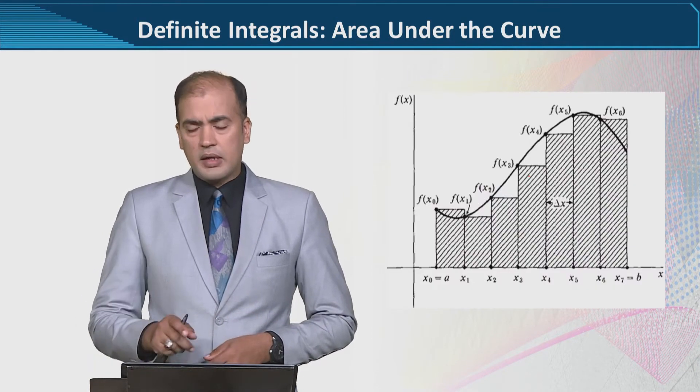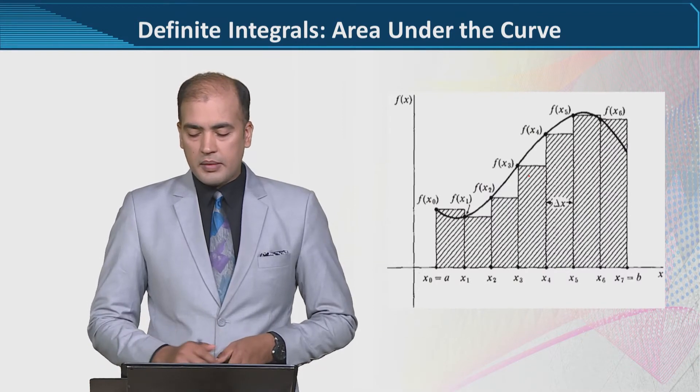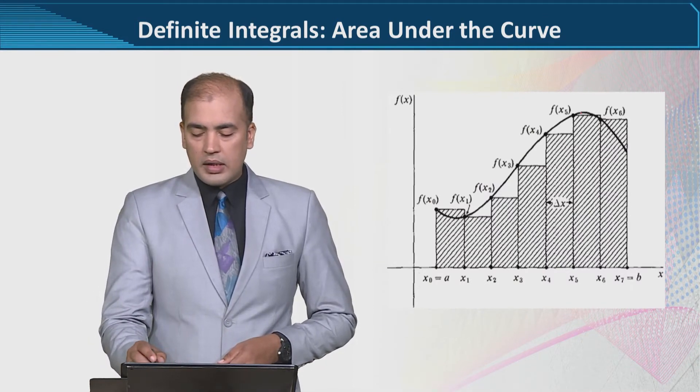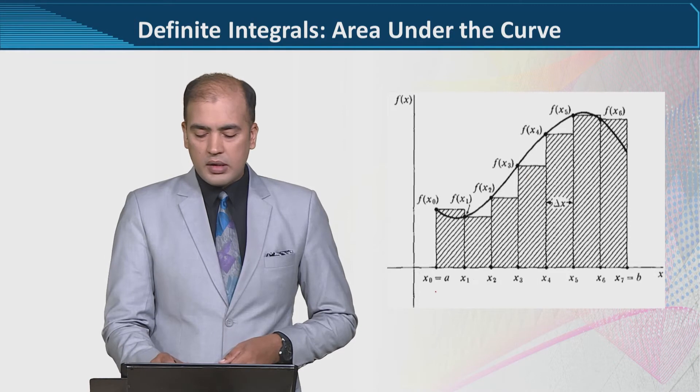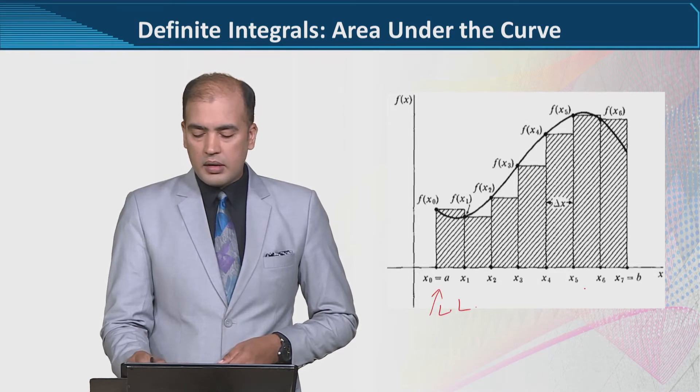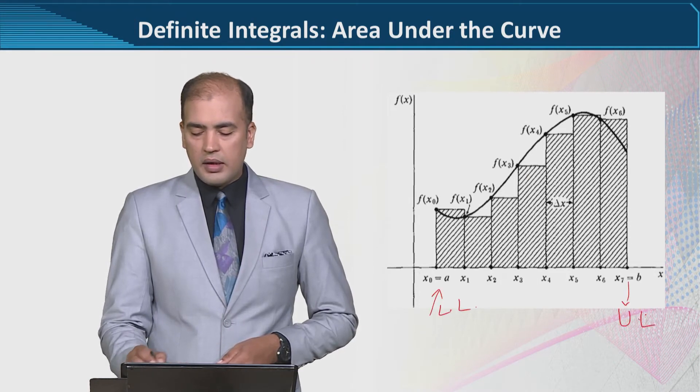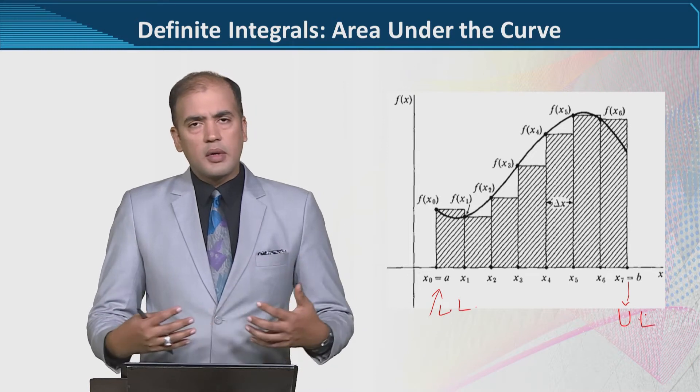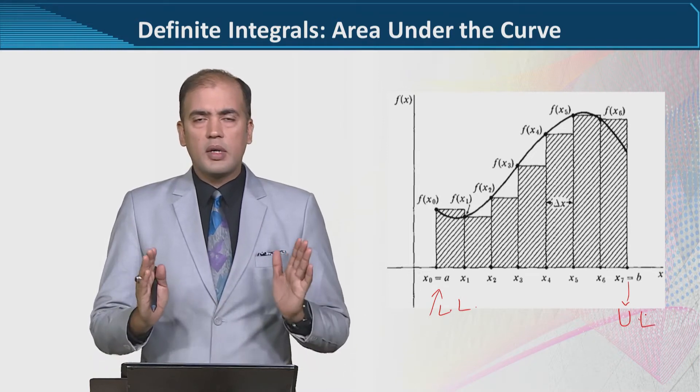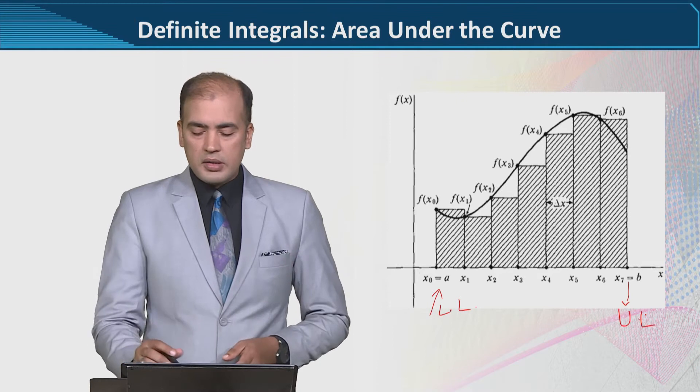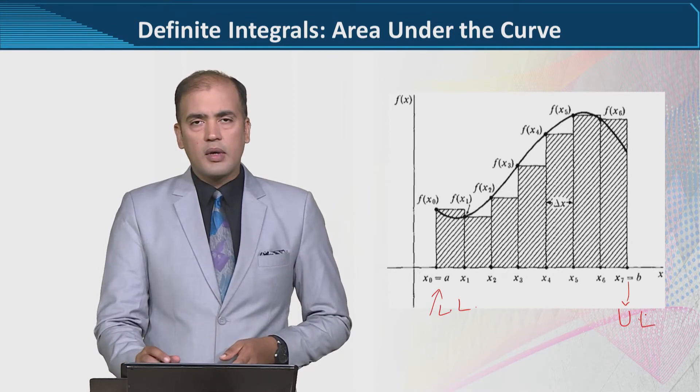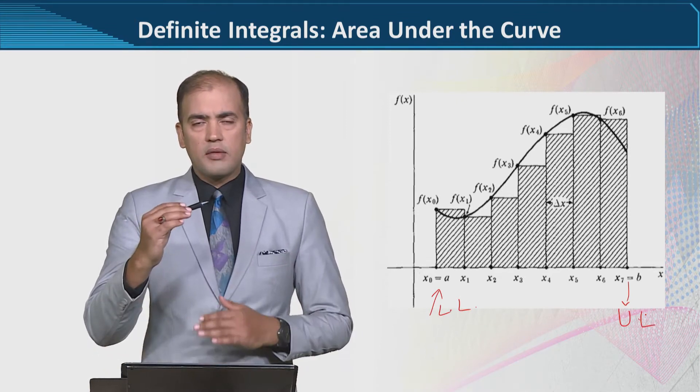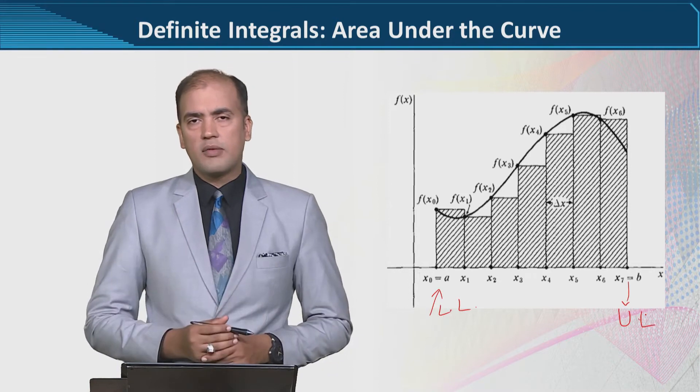And as I have shown you in this diagram, this is the overall area that we are in search of. This is the lower limit, this is the upper limit, and we use them in order to limit the analysis. And the area between the curve and the x-axis is that area that we are looking for.